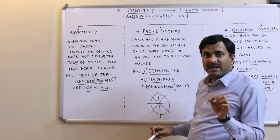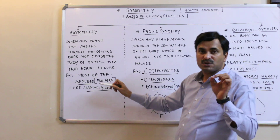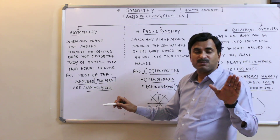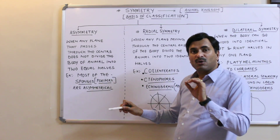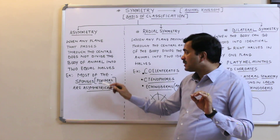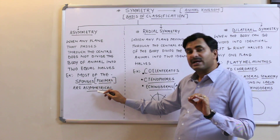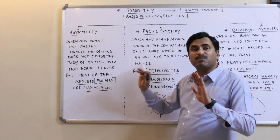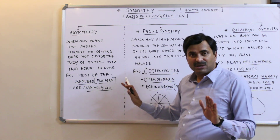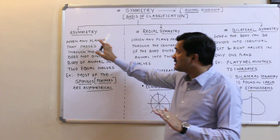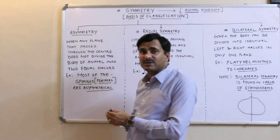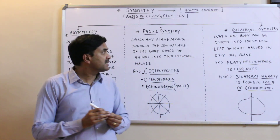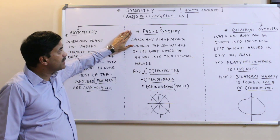It has been seen that most of the sponges — I am not talking about hundred percent, but mostly, generally — the sponges are having asymmetry. So the sponges or the poriferans are asymmetrical. This is the first type of symmetry known as asymmetry.